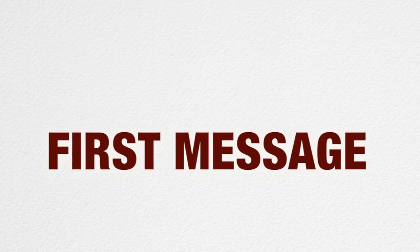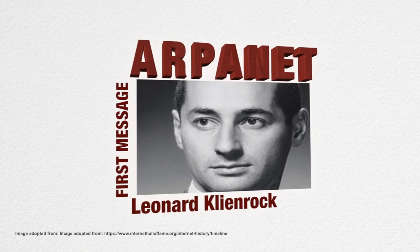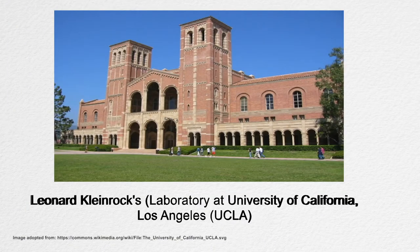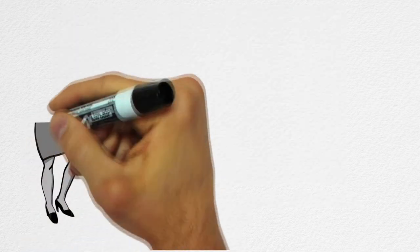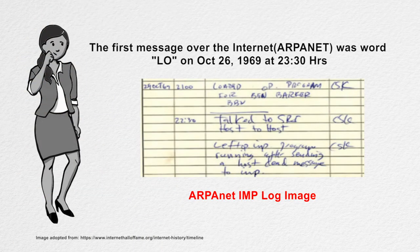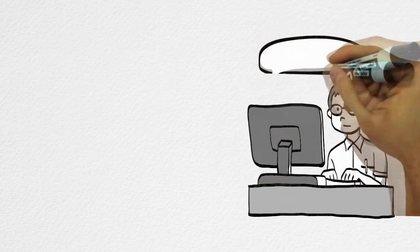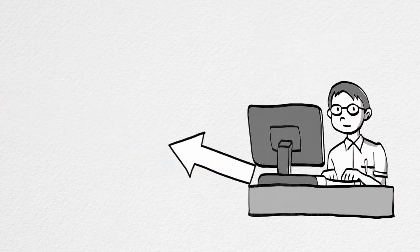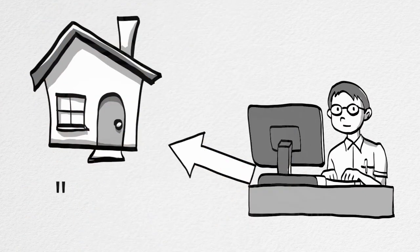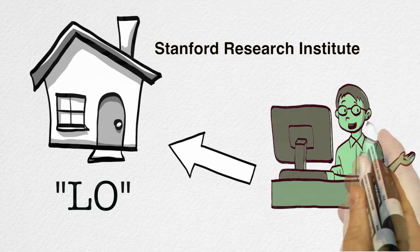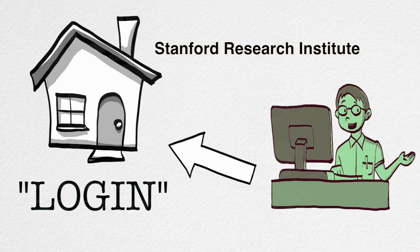The first message was sent over the ARPANET, a packet switching network, by Leonard Kleinrock's Laboratory at University of California, Los Angeles. You will be surprised to know that the first message sent over the internet was the letters LO. They intended to send the word 'login' but only the first two letters reached the destination at the second network node at Stanford Research Institute, and before the last three letters could reach the destination, the network was down due to a glitch. Soon the error was fixed and the message was resent.